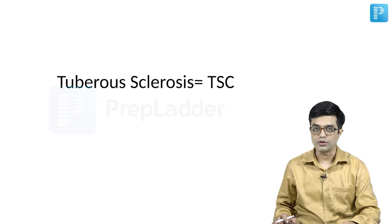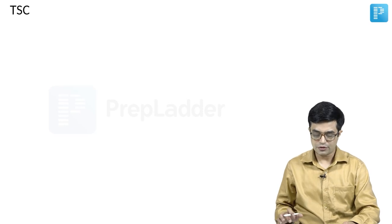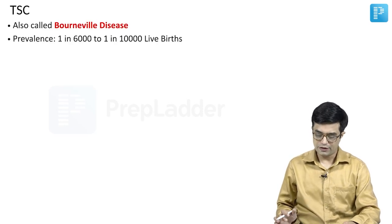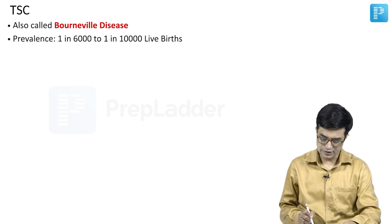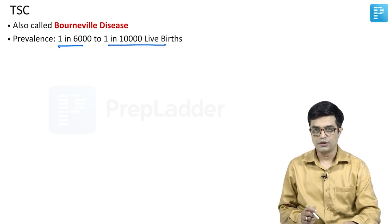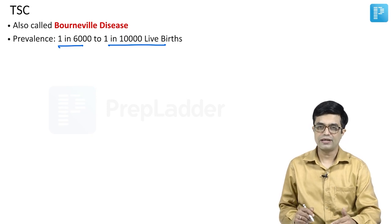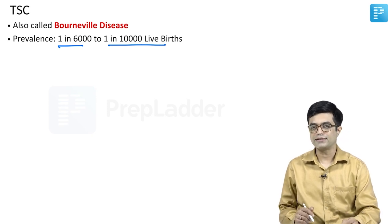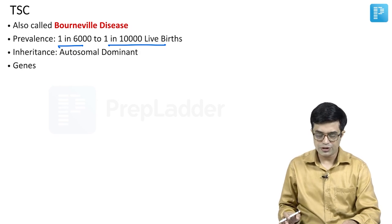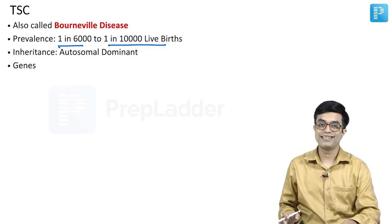We come to the discussion of tuberous sclerosis, also called Bourneville disease. The prevalence varies between 1 in 6,000 to 1 in 10,000 live births, making it relatively more frequent compared to NF2 but slightly less frequent than NF1. It also shows autosomal dominant inheritance, and there are two genes responsible for producing the same disease — tuberous sclerosis.